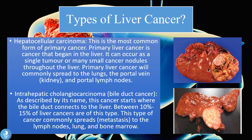Moving on to the malignant tumors which cause liver cancer, the first is the hepatocellular carcinoma. This is the most common form of primary cancer in the liver. It can occur as a single tumor or many small cancer nodules throughout the liver, and primary liver cancer will commonly spread to the lungs, the portal vein, the kidneys, and the portal lymph nodes. This image shows what hepatocellular carcinomas look like.